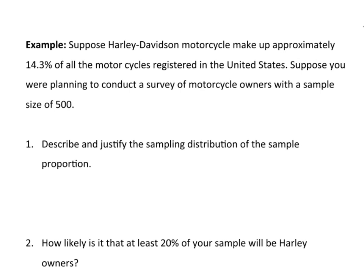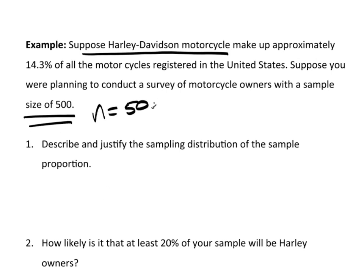Now that we've taken a look at how to apply the central limit theorem for a proportion, let's go ahead and apply it to a problem. Suppose that Harley-Davidson Motorcycle Company makes up approximately 14.3% of all motorcycle sales registered in the United States. Suppose you're planning to conduct a survey of motorcycle owners with a sample size of 500, so N equals 500. Describe and justify the sampling distribution of the sample proportion.